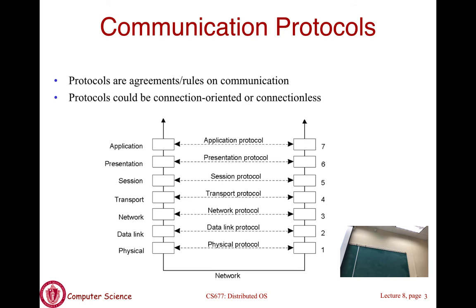The transport layer is the end-to-end protocol. While the network layer handles one link at a time, the transport layer looks at the full picture: how many packets were sent, how many received, how many lost, whether to retransmit lost packets, and at what rate to send. In TCP/IP, TCP—Transmission Control Protocol—runs at the transport layer.